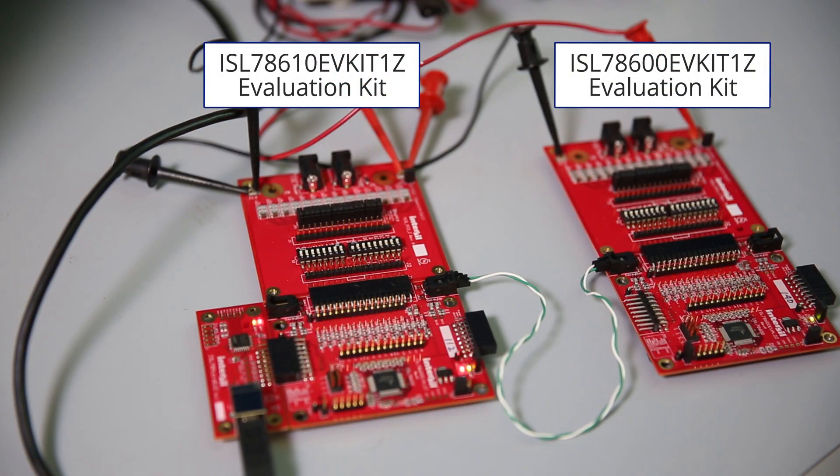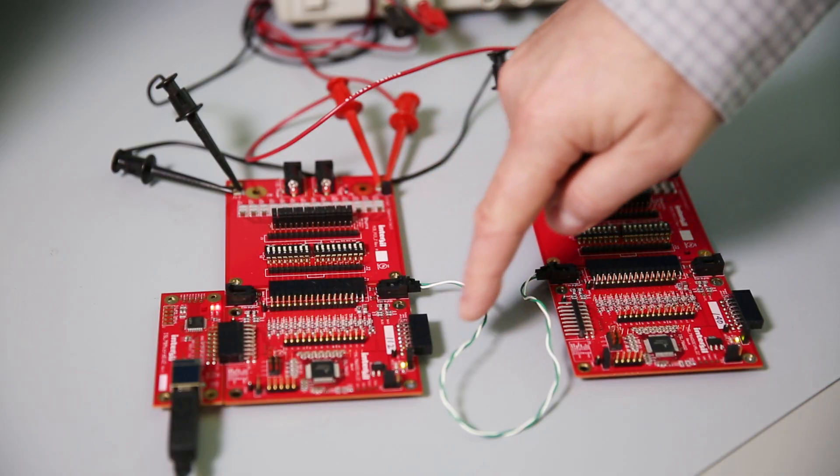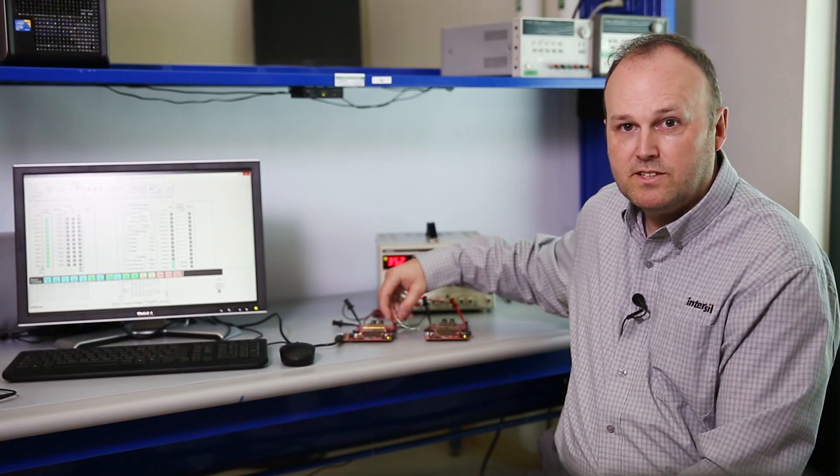For demonstration purposes, I've set up two boards here in a daisy chain configuration. If you wish to evaluate the boards in a daisy chain configuration, then you should order one eval kit for each device in the daisy chain. In this case, that would be two kits. Up to 14 boards can be daisy chained together using a simple twisted pair up to one meter in length.